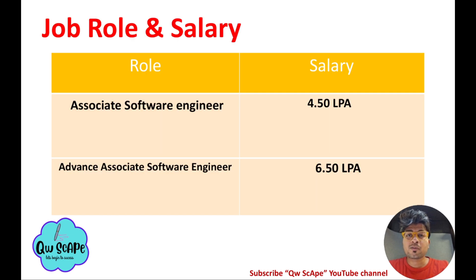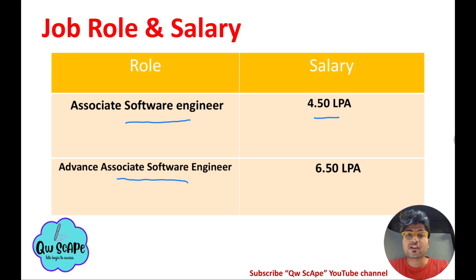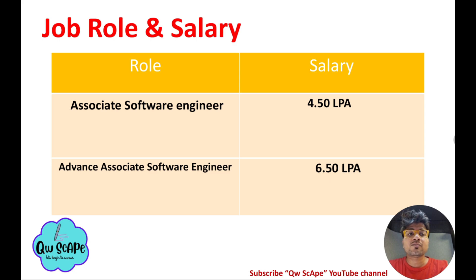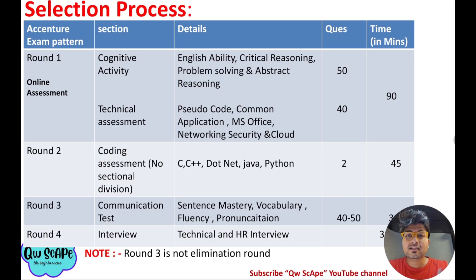Let's talk about job roles and salary. For the Associate Software Engineer role, they will give you a salary of 4.5 LPA. For Advanced Associate Software Engineer, they will give you 6.5 LPA. To get the 6.5 LPA package, you have to perform well in your online assessment, coding assessment, and interview.